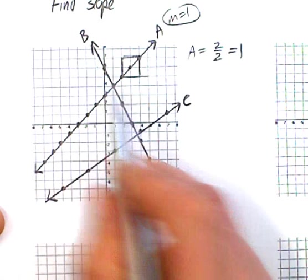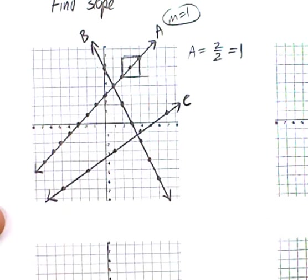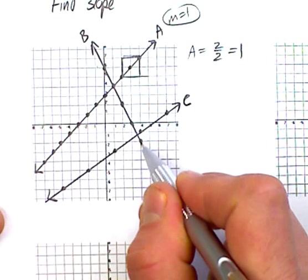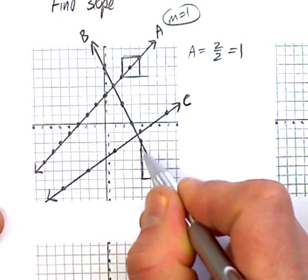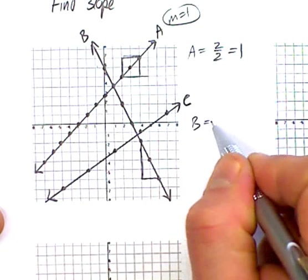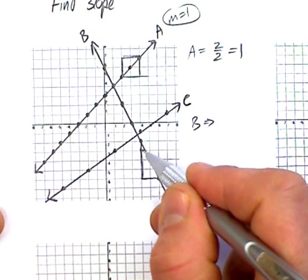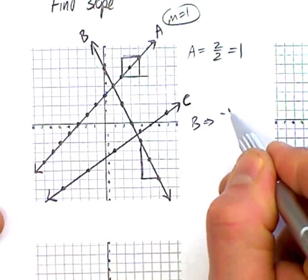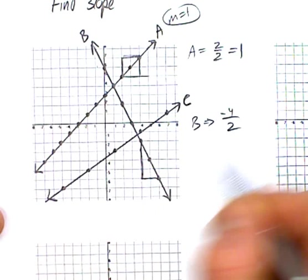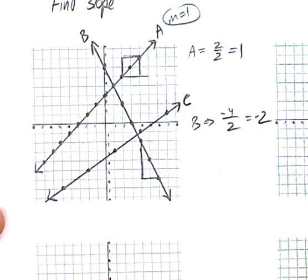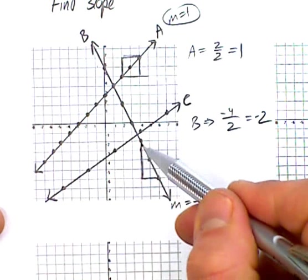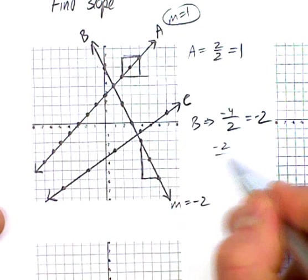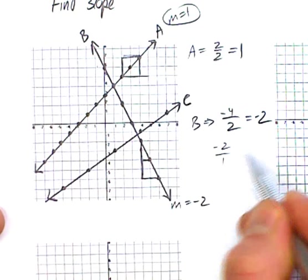How about for B? Pick any two points. Try and find something. So for B, I went down 1, 2, 3, 4. So minus 4 over 2 gives you negative 2. So your slope for this line is negative 2. You could have gone down 2 and over 1 gives you the same thing, negative 2.